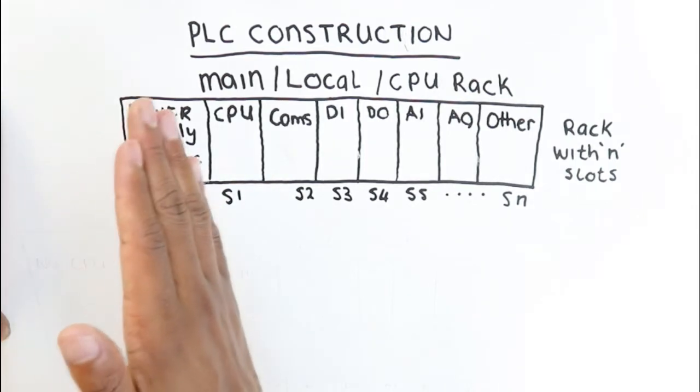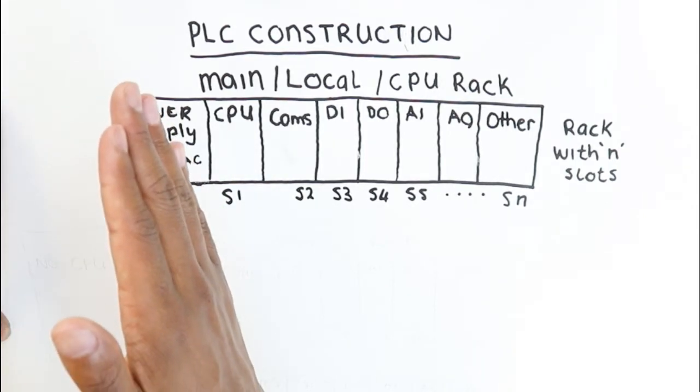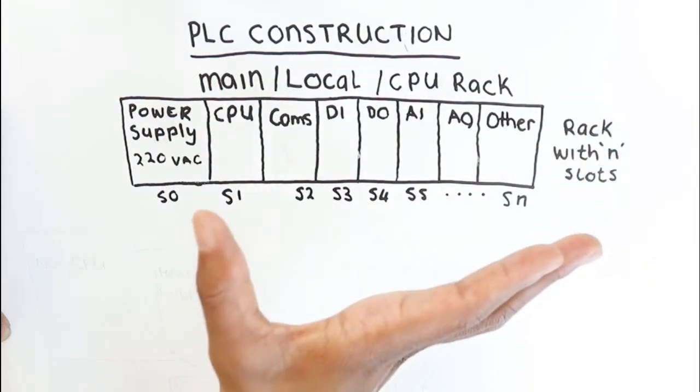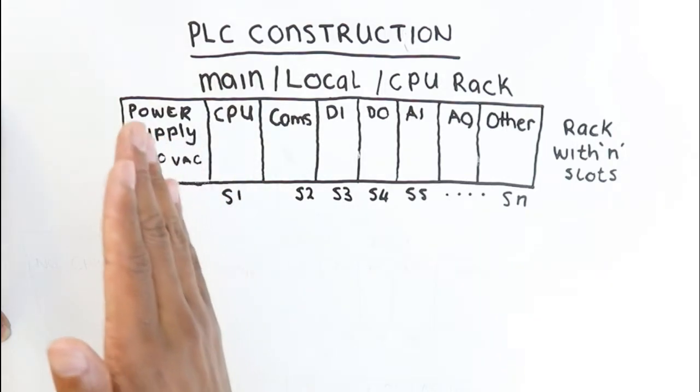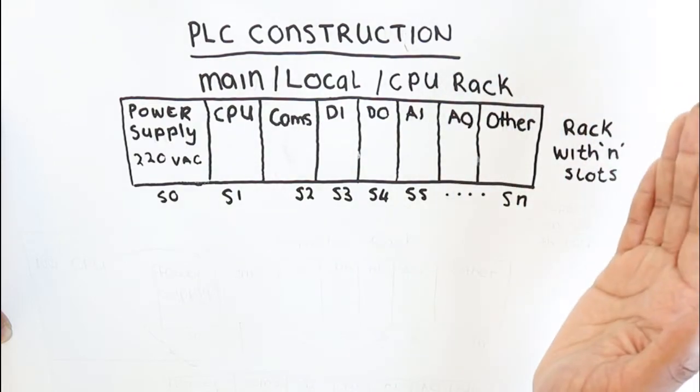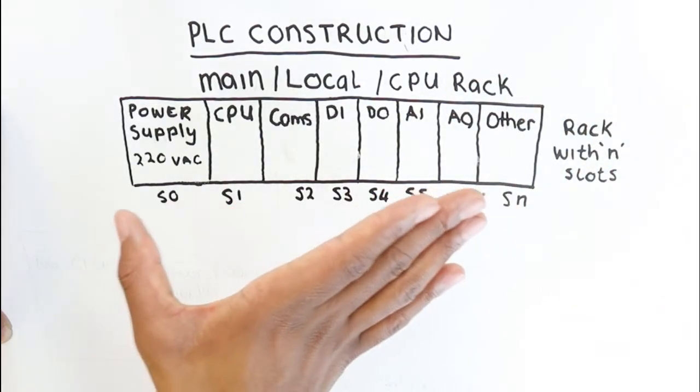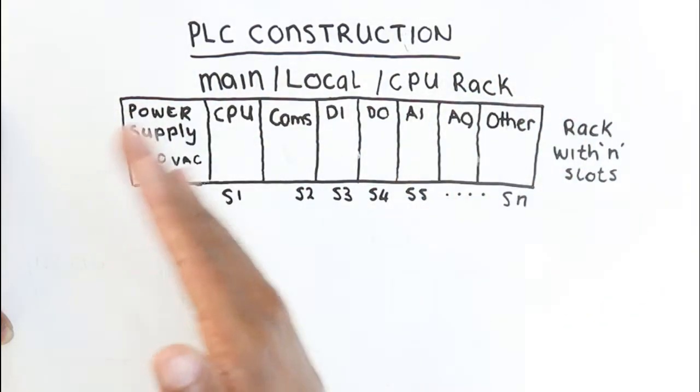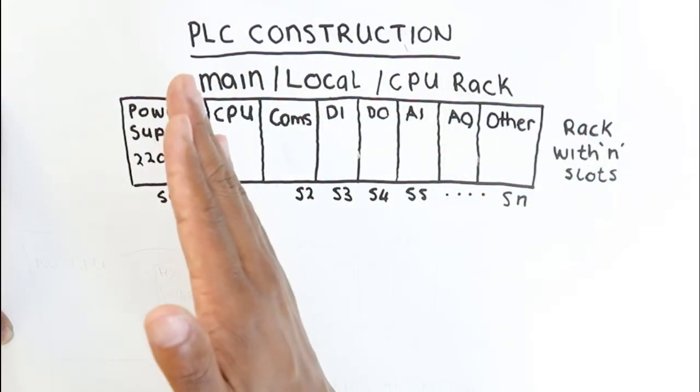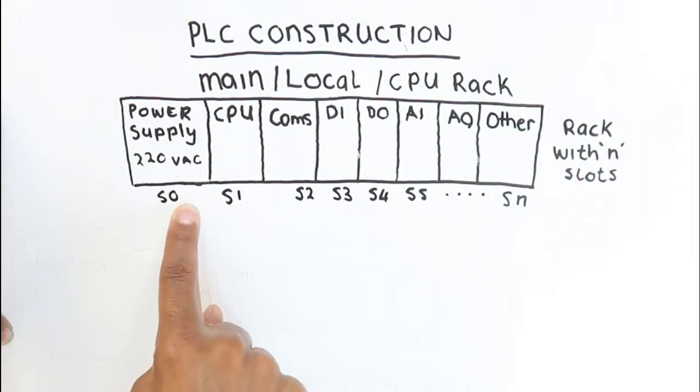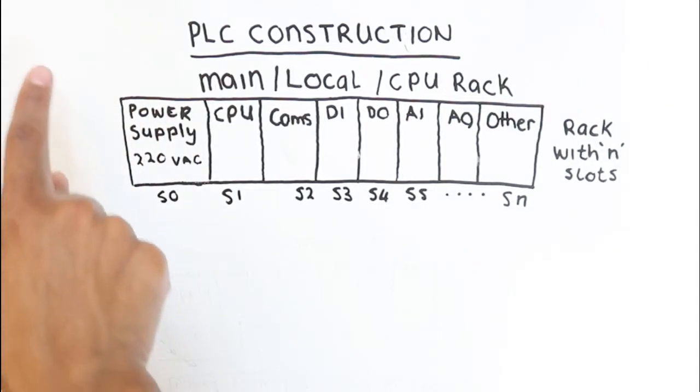Now I must emphasize this: the order in which you can have the cards on the rack may change with different manufacturers. Some manufacturers are strict in terms of where you put particular cards on a PLC rack. Some manufacturers do not have specific rules of where you can place the cards, but I've just gone with a general example or a usual industrial convention of how you would set up your PLC rack.